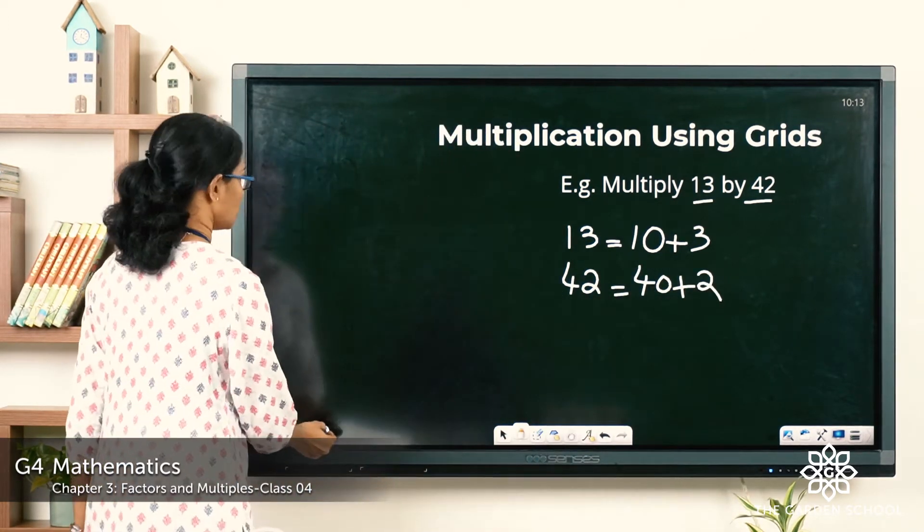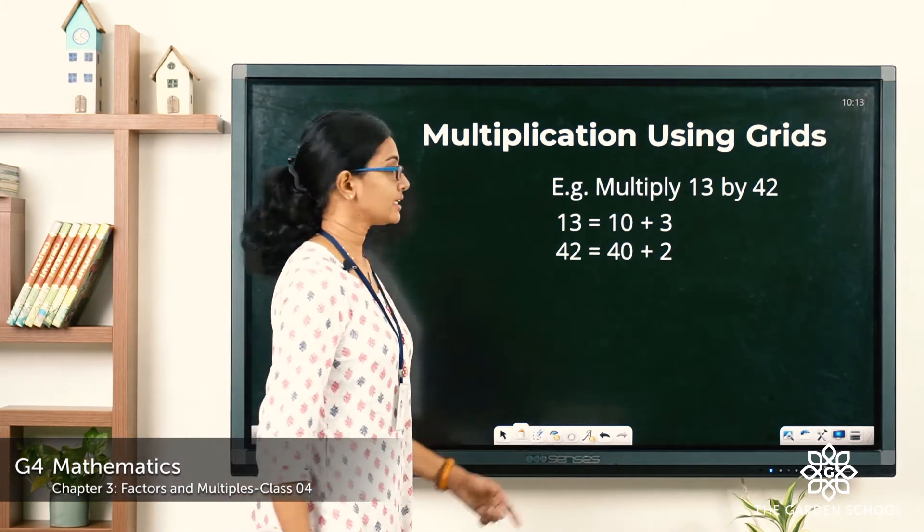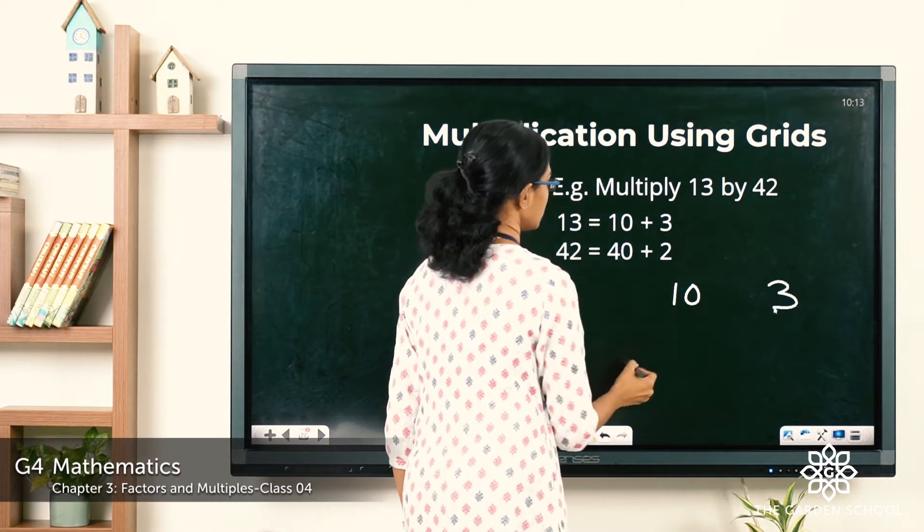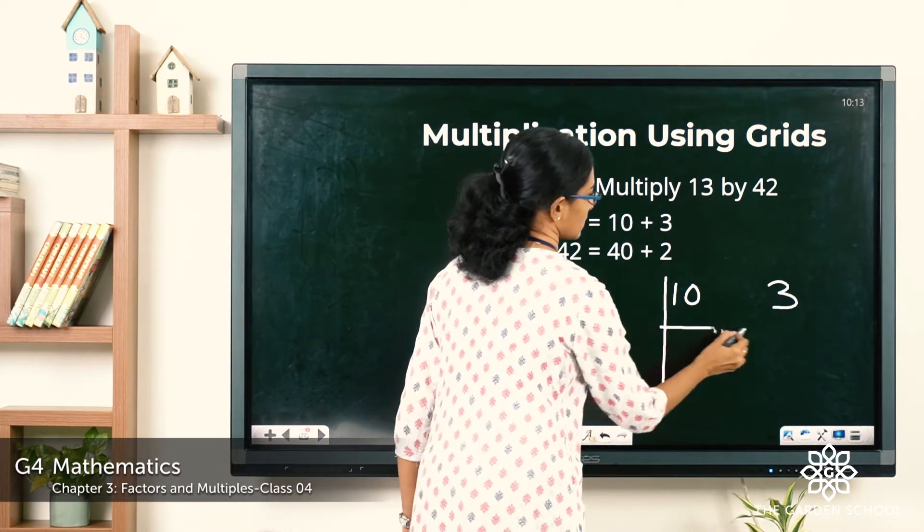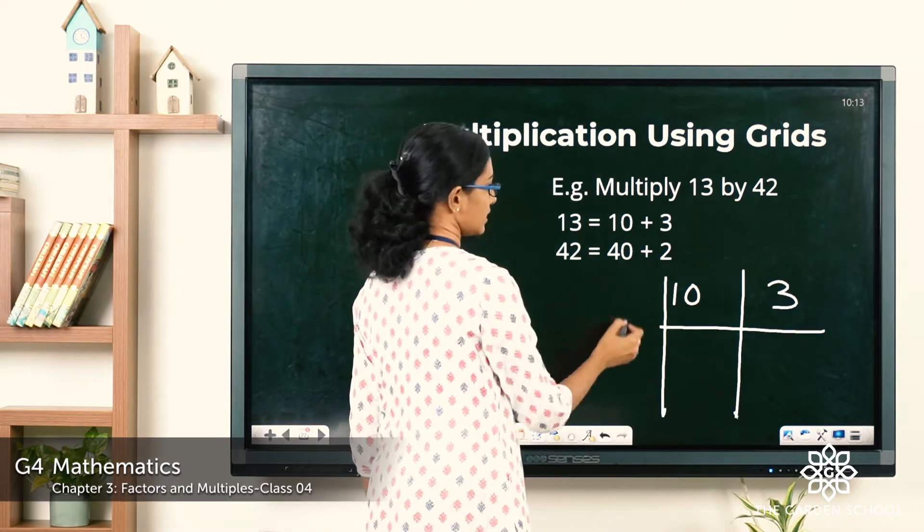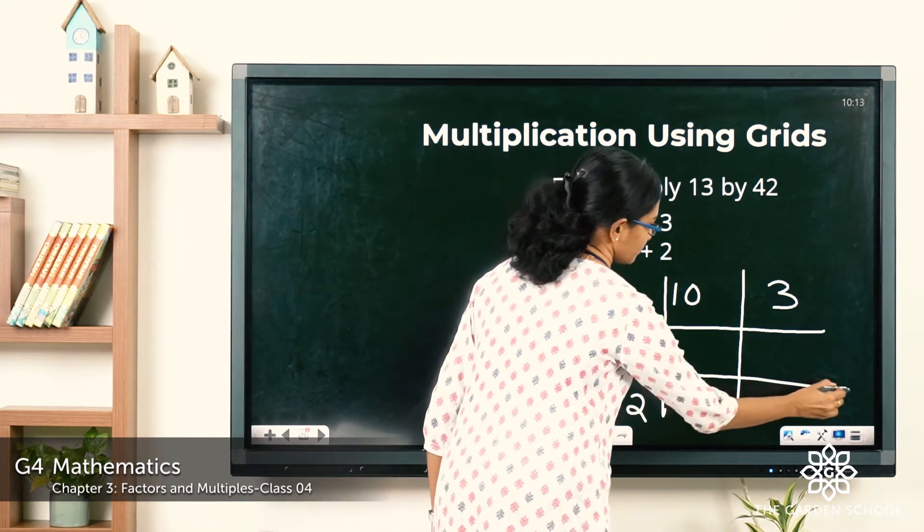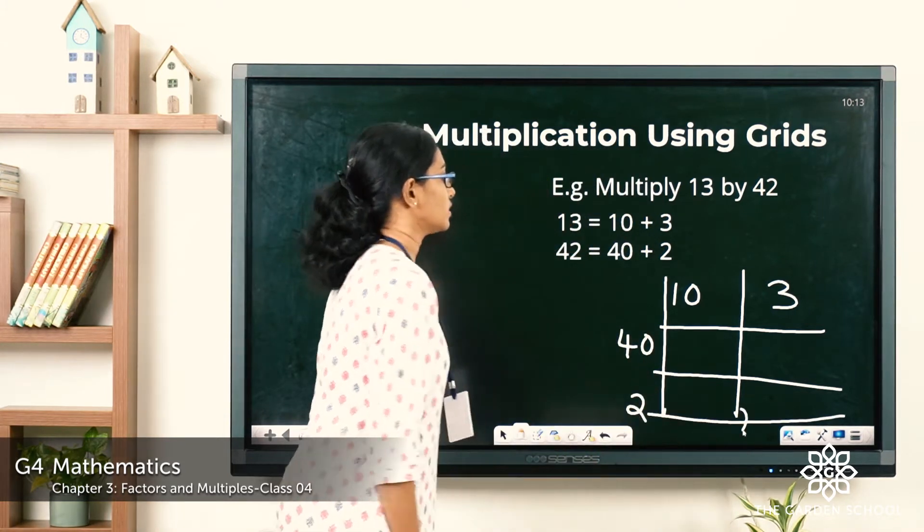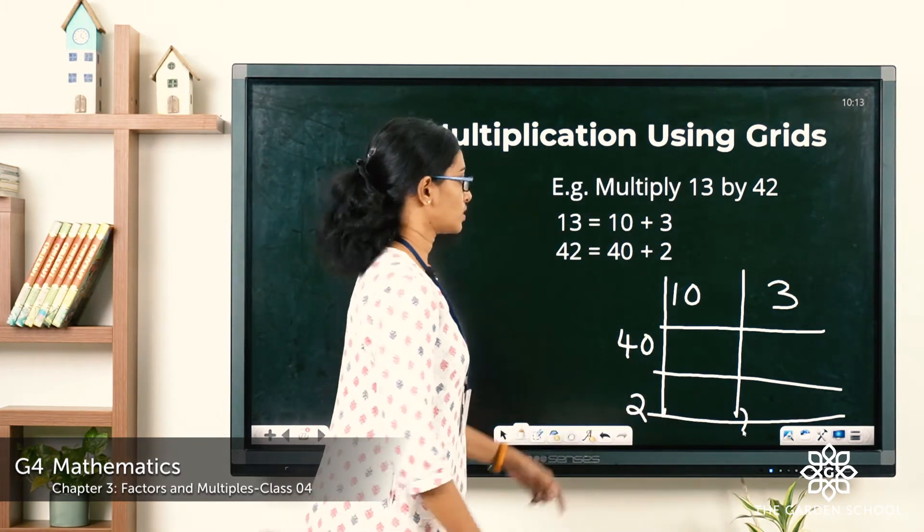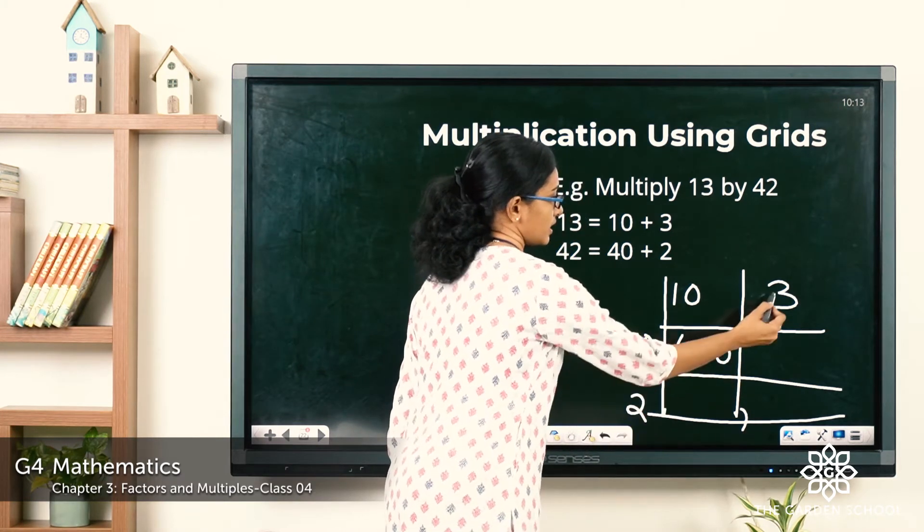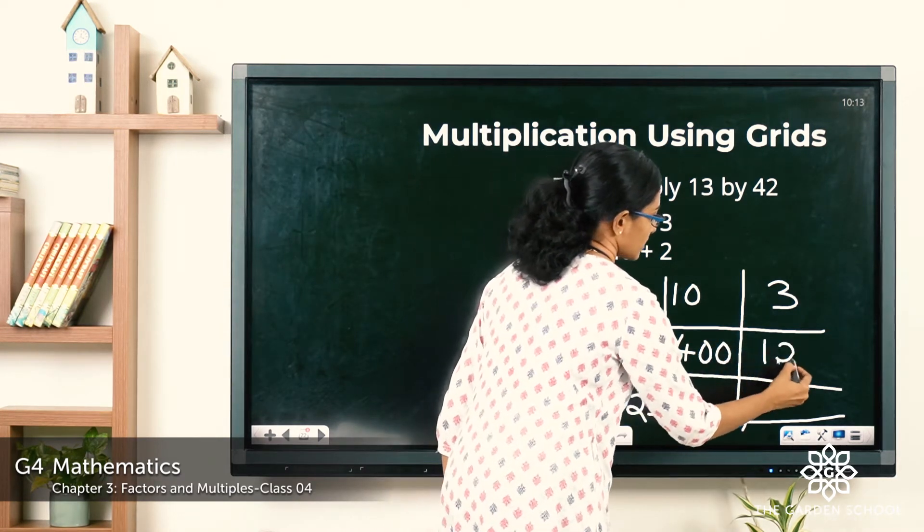Now let's draw the grid. So 13 can be written as 10 and 3 here, and 42 is written as 40 and 2. Here we have two rows. Now 40 into 10 is 400, 40 into 3 is 120.